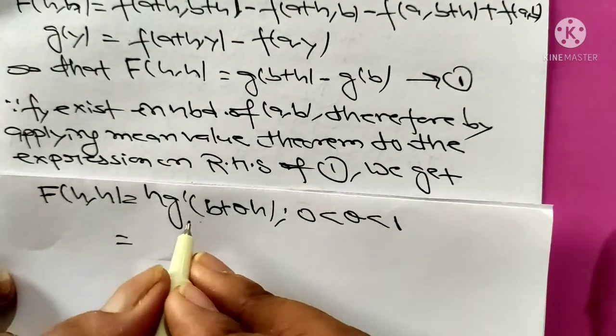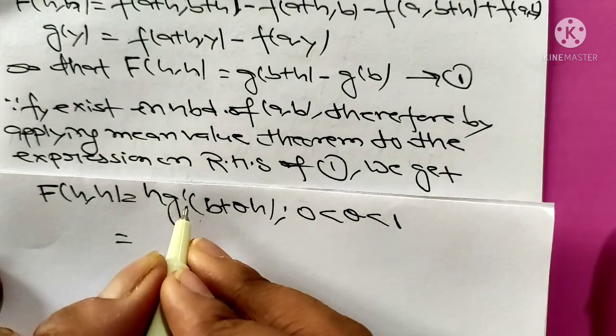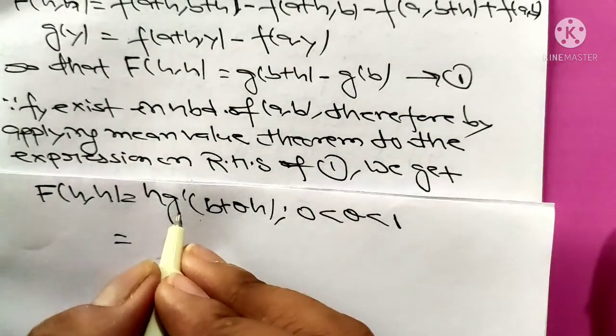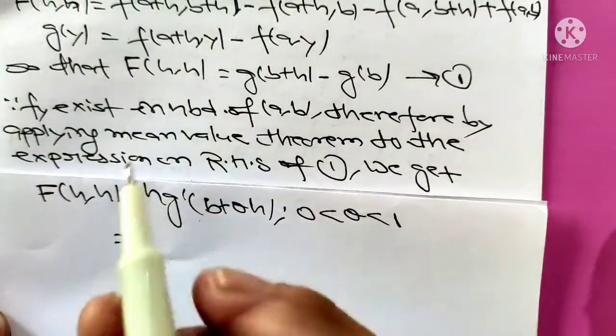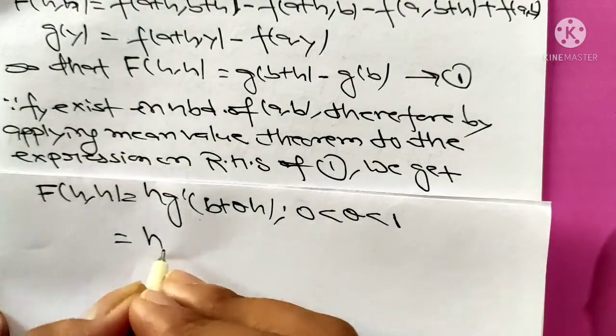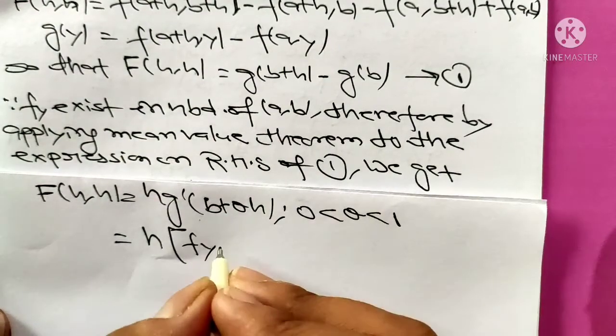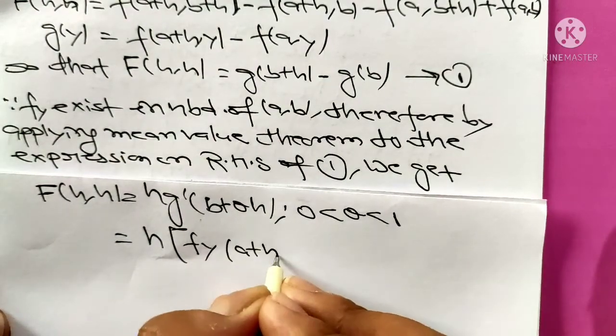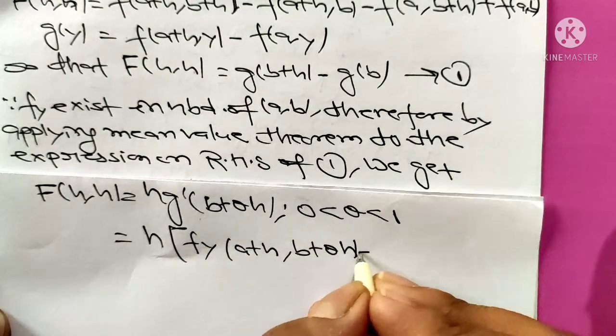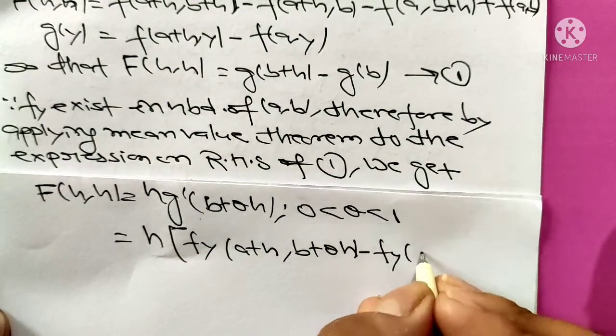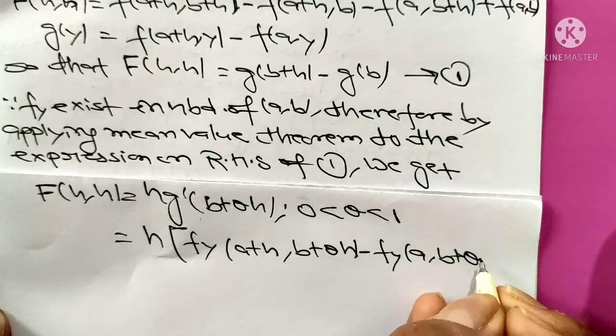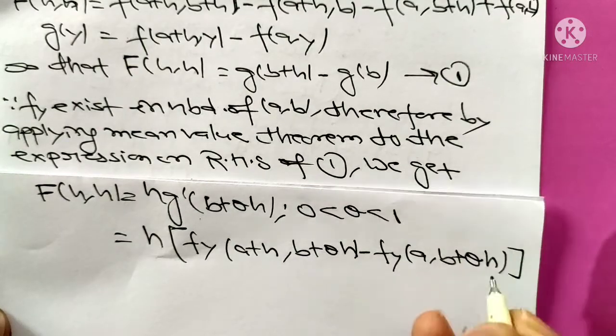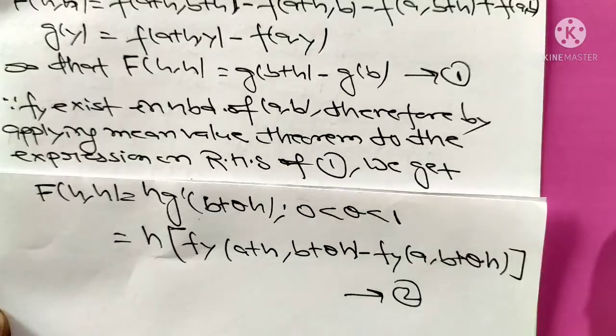Now we are going to put the value of g'. From the value of gy we get F(h,h) = h[fy(a+h, b+θh) minus fy(a, b+θh)]. Give it equation 2.